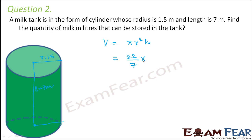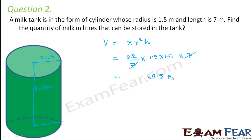So π is 22/7, r is 1.5, so 1.5 × 1.5 × h is 7. The 7s cancel, giving 49.5 metre cube, since all measurements are in meters. Now we need to find the quantity of milk in liters.